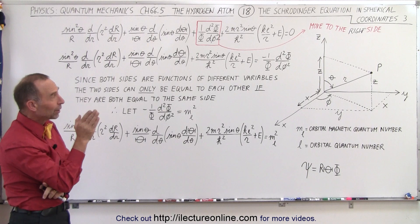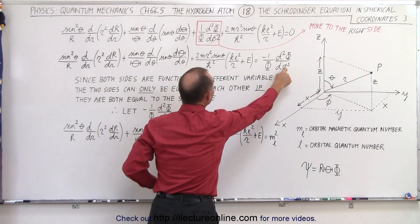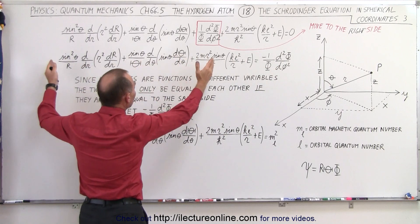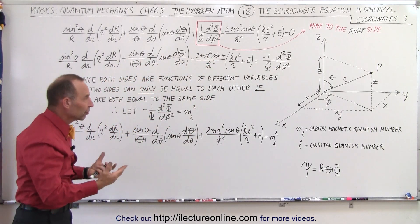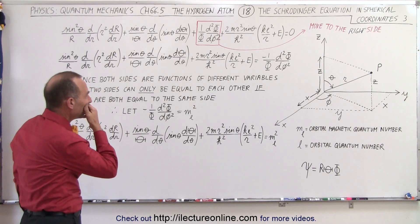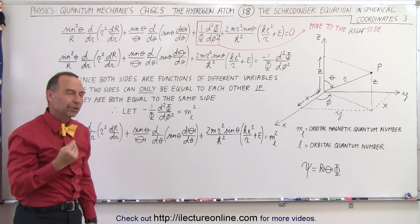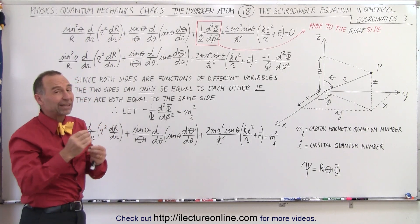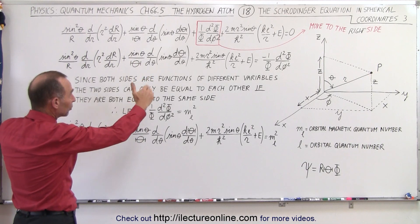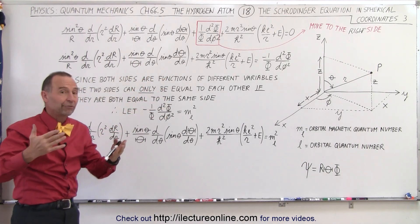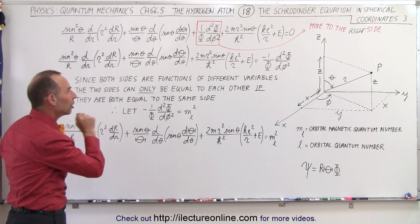Now when we take a look at it, we realize that the right side contains the function with the variable phi, and the left side contains the two functions with the variable theta. So we, in a way, separated the functions and the variables. But how can functions of different variables be equal to one another? Well, the only way they can be equal to each other, the only way that the left side can be equal to the right side, because they are, after all, functions of different variables, is if they're equal to the same constant.